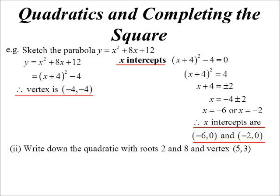Now, the question where we had, write down the quadratic with roots 2 and 8 and vertex 5, 3. I could do that question by using completing the square. If its vertex is 5, 3, then I know it must be x minus 5 all squared plus 3.